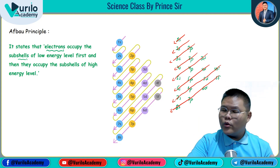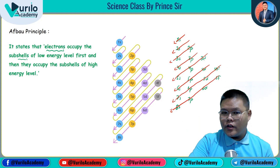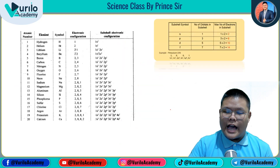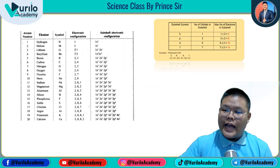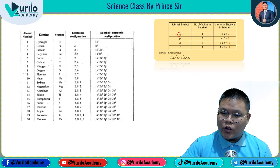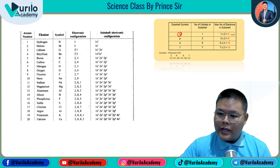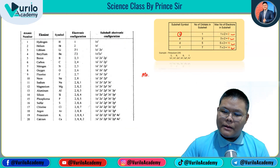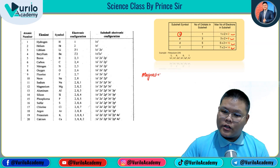Remember how many electrons each orbital can hold: S holds 2 electrons, P holds 6 electrons, D holds 10 electrons, and F holds 14 electrons. So we write accordingly. For example, if we are given magnesium with atomic number 12, we need to find the electronic configuration.